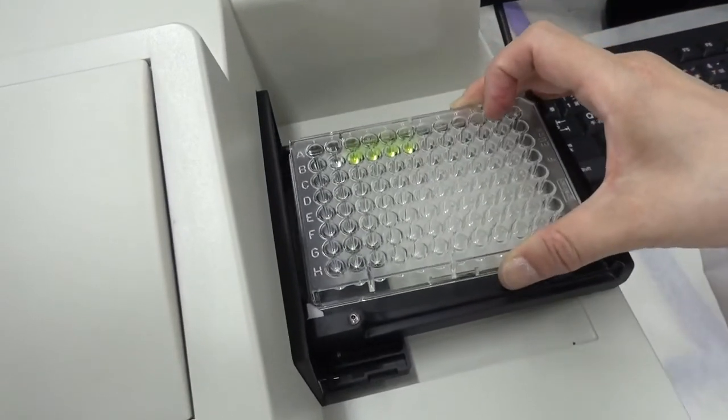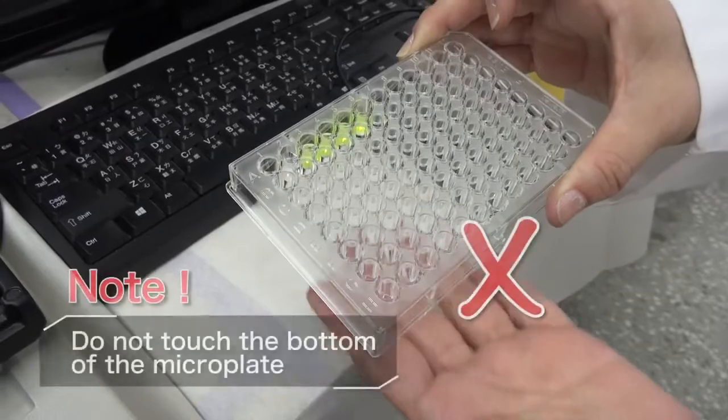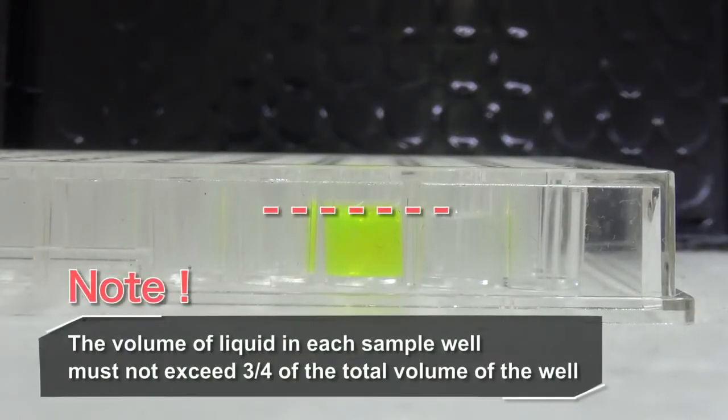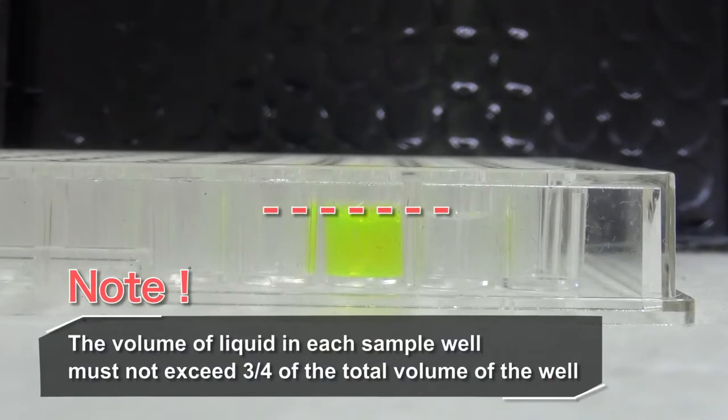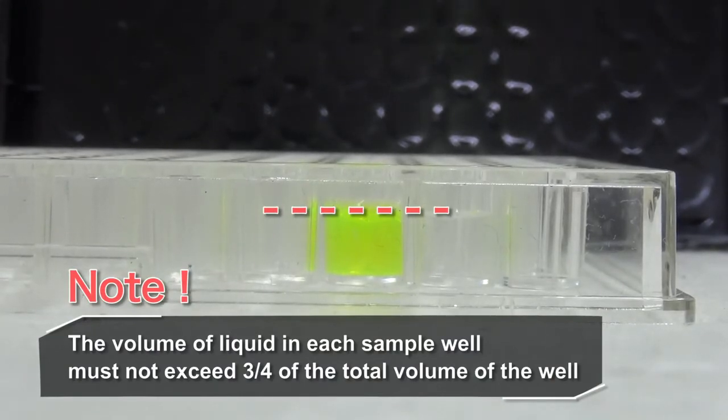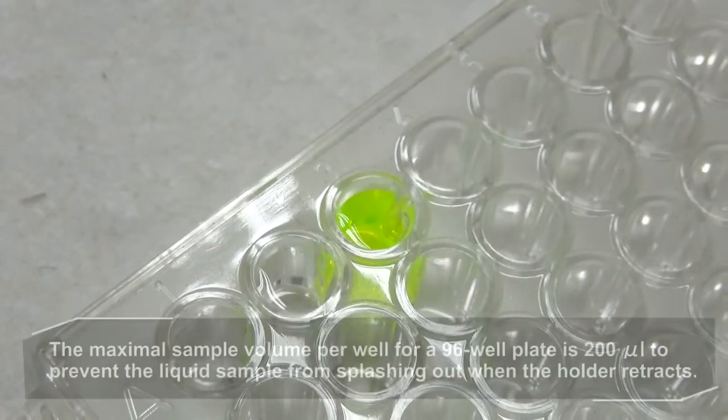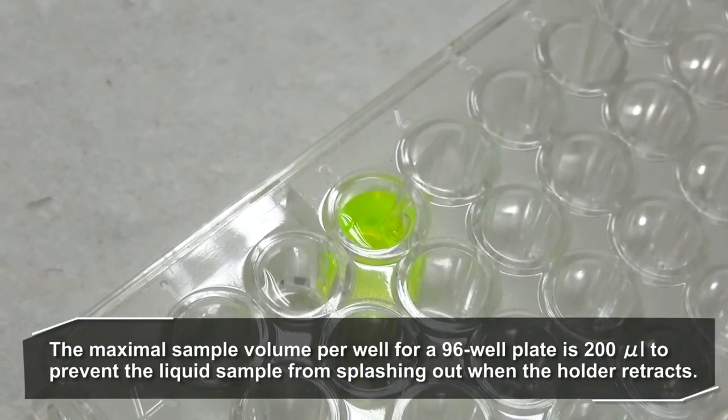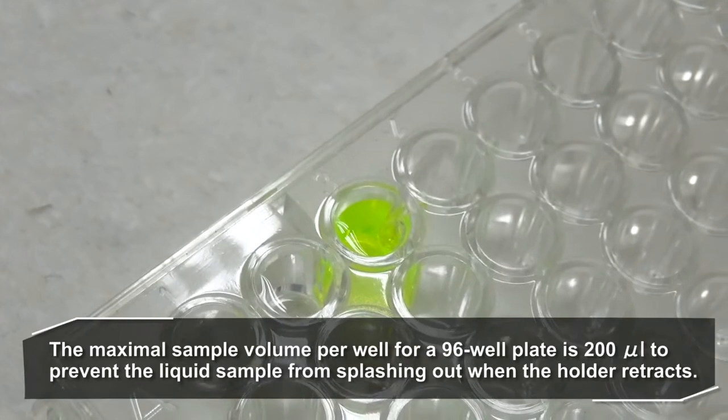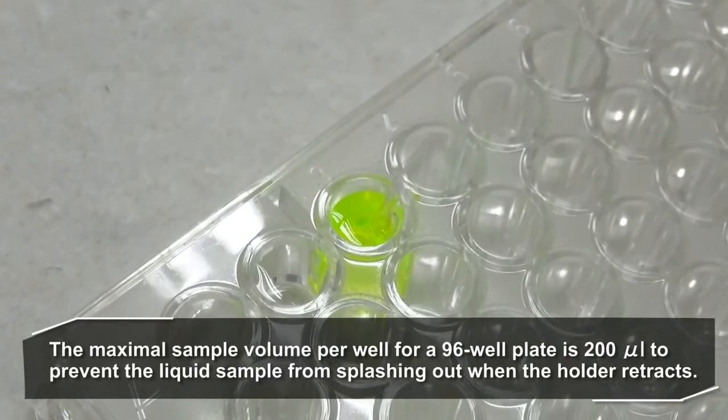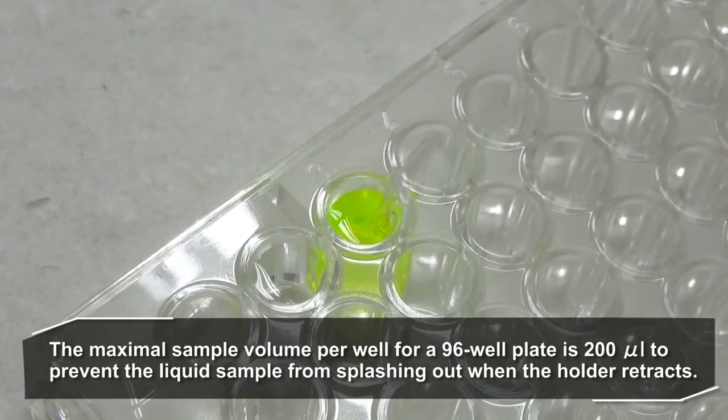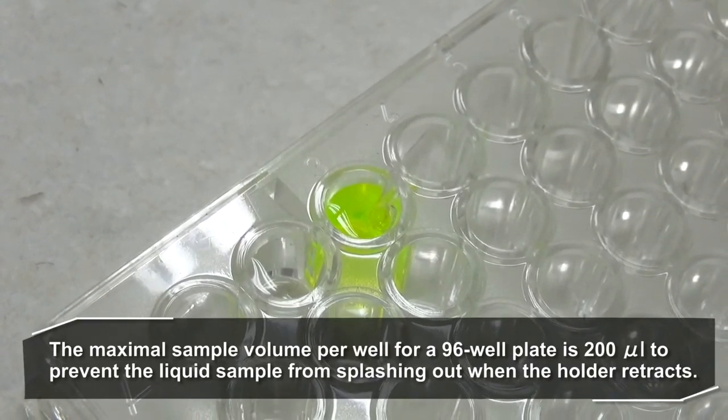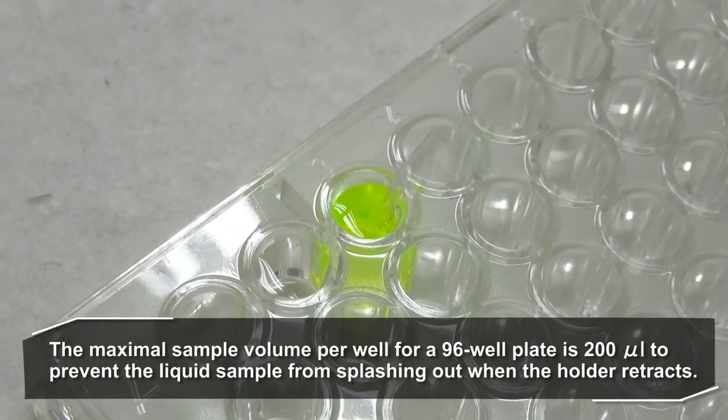Insert a microplate containing the samples. Do not touch the bottom of the microplate. The volume of liquid in each sample well must not exceed three-quarters of the total volume of the well. The maximum sample volume per well for a 96-well plate is 200 µL to prevent the liquid sample from splashing out when the holder retracts and from damaging the internal part of the spectrophotometer. If the liquid does splash out, clean up immediately.